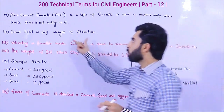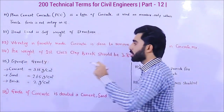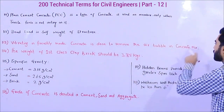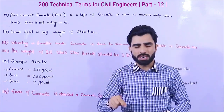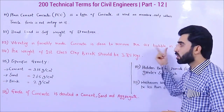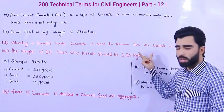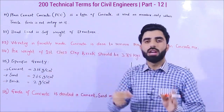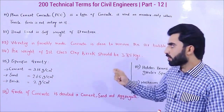Term number 113 is vibrating, or the vibrating machine. We use a vibrating machine on freshly made concrete to remove air bubbles from the concrete mix. When we pour concrete for a slab, beam, or column, air bubbles occur inside. Those air bubbles can create holes and pores in the concrete. To remove those air bubbles, we use a vibrating machine on fresh concrete. It is very important in building construction.